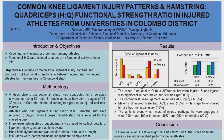Knee ligament injuries are more common among athletes. Athletes are highly active and well adapted to regular exercise routines, but due to muscle strength imbalance around the knee joint and other defects in biomechanics, they may sustain knee ligament injuries. The functional HQ ratio is defined as eccentric hamstring muscle strength divided by concentric quadriceps muscle strength, and it is used to assess the functional stability of the knee joint.